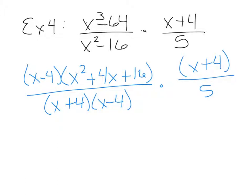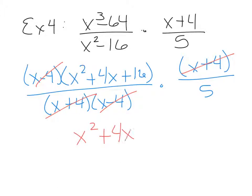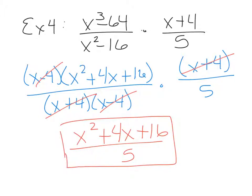When canceling, x plus 4 cancels with x plus 4, and x minus 4 cancels with x minus 4. We're left with the trinomial x squared plus 4x plus 16 in the numerator and 5 in the denominator. So the final answer is x squared plus 4x plus 16 over 5. I'm going to cover division in the next video — click to go on to example 5.